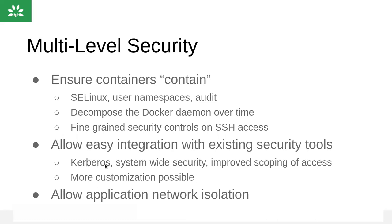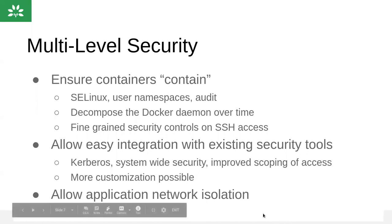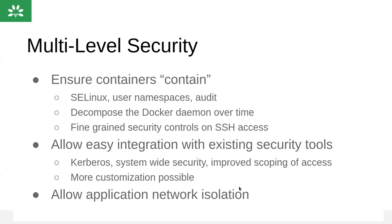It also supports network isolation at the application level. If you deploy an application in multiple nodes or multiple containers, you can integrate across them and secure the application from front-end to back-end, from one microservice to another. This kind of network isolation is a major advantage in OpenShift.